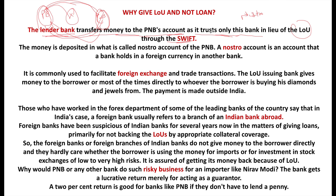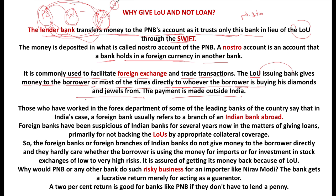A Nostro account is an account that a bank holds in a foreign country in foreign currency in another bank — the opposite is a Vostro account. PNB holds a Nostro account where it can receive money from a foreign bank in their currency. The Nostro account is commonly used to facilitate foreign exchange and trade transactions. The LOU-issuing bank — in this case PNB — then gives the money not to Nirav Modi, but directly to the American company from whom Nirav Modi is buying diamonds.